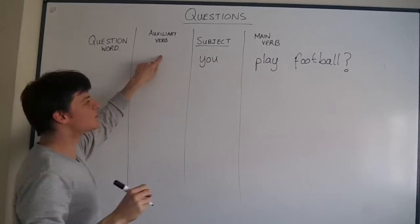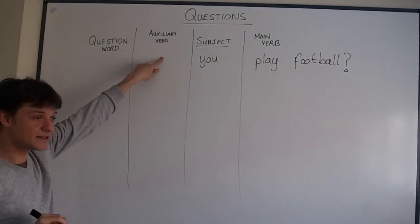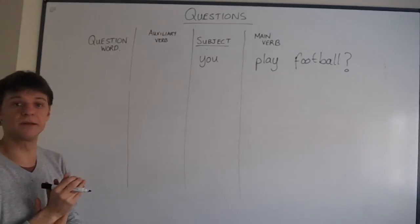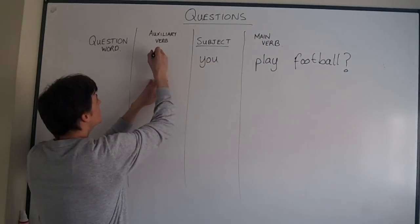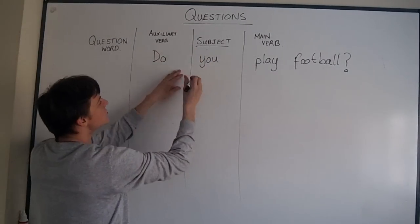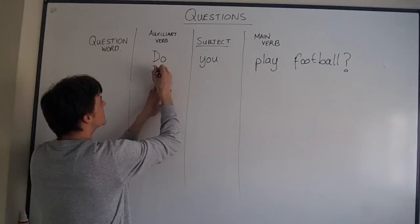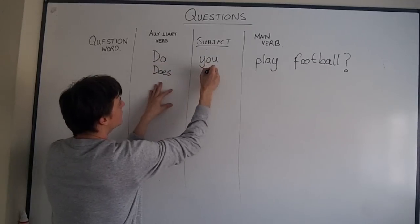In English, we must have an auxiliary verb. And in present simple, with you, the auxiliary verb is do. Do you play football or does he play football?